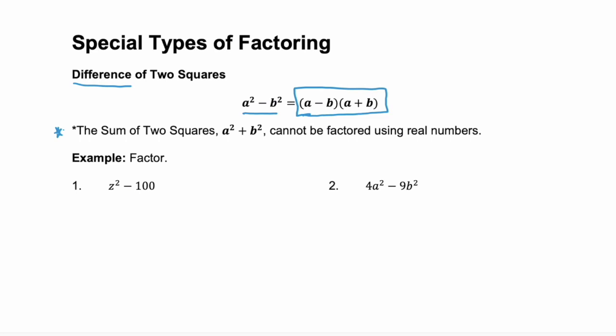Let's look at example one, z squared minus 100. Well, we know that z squared is something squared, right? It's z squared. Now, what about 100? Is 100 something squared? Of course it is. 100 is the same as 10 squared. So here, we really have z squared minus 10 squared. And if we use that formula above, we know that this factors to z minus 10 times z plus 10. And remember, you can always use the distributive property or FOIL to check your answer.